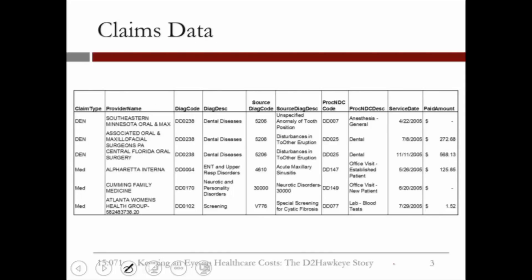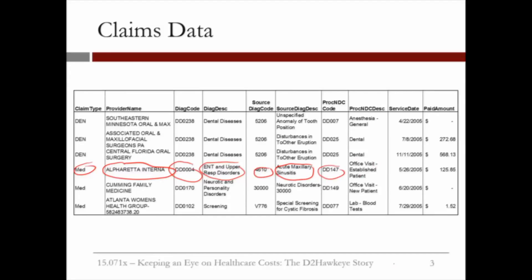Let me give you some examples on claims data. This shows six different claims. Let's consider this one. This is the provider's name, the corresponding diagnostic code — this is about upper respiratory disorders. This is another code associated with diagnosis, and this is the scientific term for the diagnosis. The specific code again. This was related to an office visit and it's an established patient. The date and the amount of money claimed by the physician.